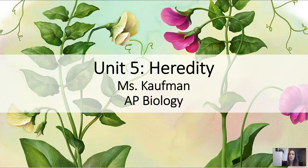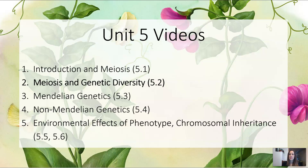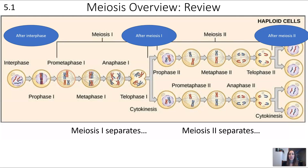Welcome to unit 5 of AP Biology. This overall unit is heredity and today's focus is going to be on meiosis and genetic diversity. Let's get started with a review. Here you see an overview of meiosis, and what I want you to fill in is how many chromosomes and how many chromatids you would expect to find in humans at each of these stages of meiosis.